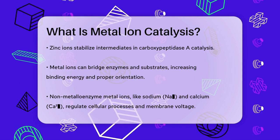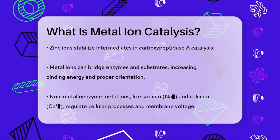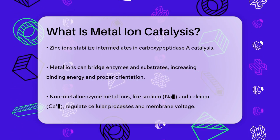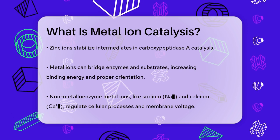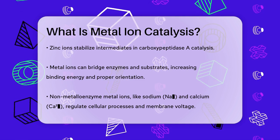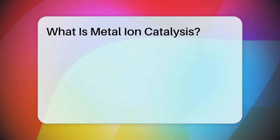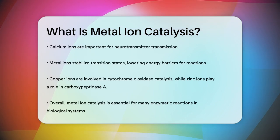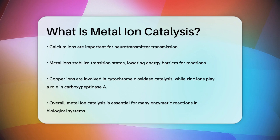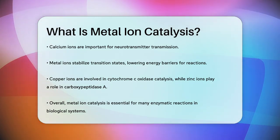In addition to these roles, metal ions can stabilize transition states, which are intermediate structures that form during a reaction. By stabilizing these transition states, metal ions help to lower the energy barrier for the reaction, making it easier for the reaction to proceed. For example, in the presence of a tetrahedral oxyanion and another oxygen attached to a carbonyl group, the metal ion can coordinate with these anions and stabilize the negative charge, positioning the molecules correctly for bond formation or breaking.